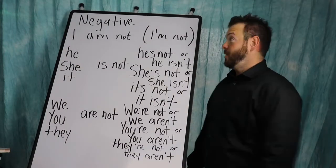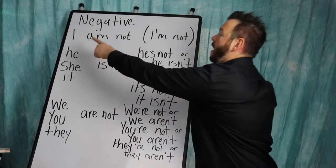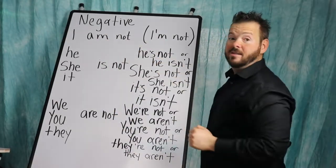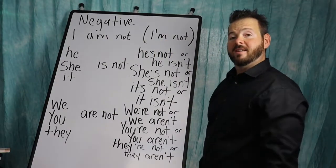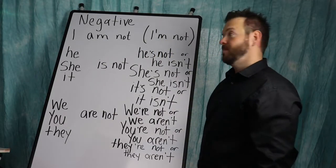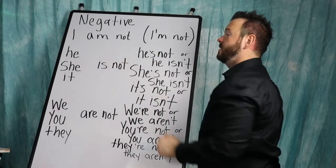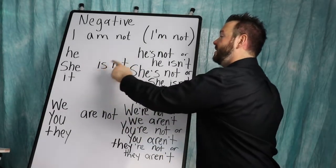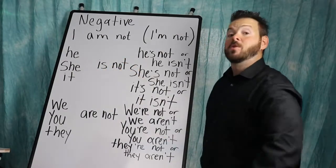Okay, here's the negative. Okay, negative, as you can see. Now, I am not, I'm not, repeat it. He is not, she is not, it is not. Repeat it.